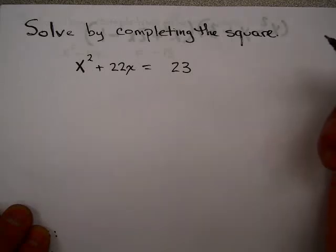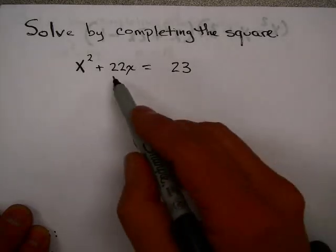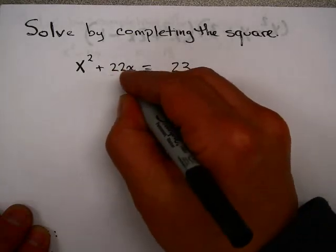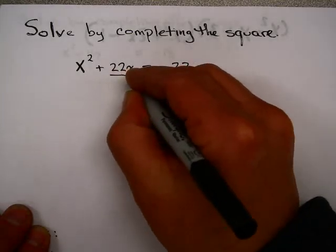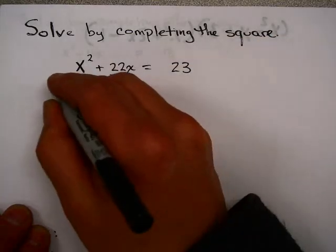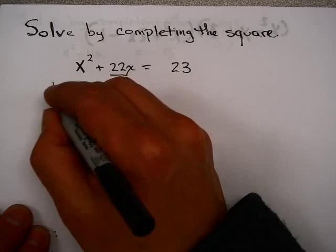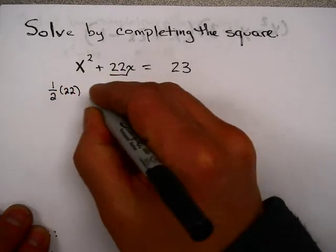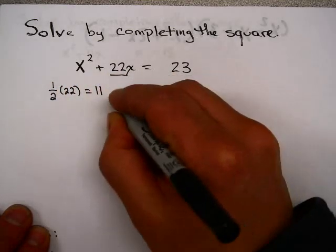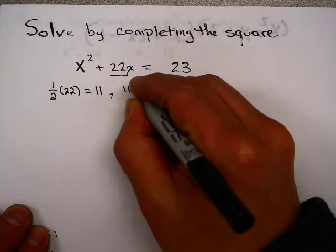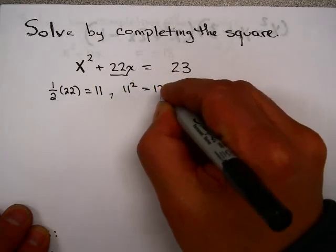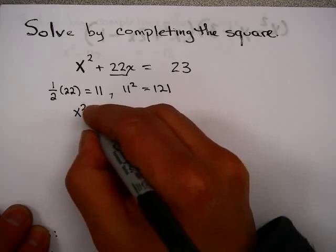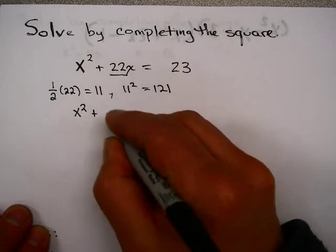What we do is take the coefficient of the x term, which in this case is 22. We take one half of 22, which is 11. And then I take 11 and square it, which is 121. Now I'm going to add that to both sides of the equation.